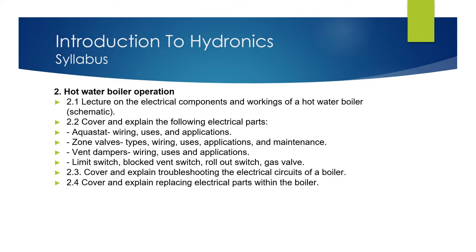Section 2: Hot Water Boiler Operation. 2.1 Lecture on electric components and working of a hot water boiler schematic. 2.2 Cover and explain the following electrical parts: aquastat - wiring, uses, and application; zone valve - types, wiring, uses, applications, and maintenance; vent damper - wiring, uses, and application.